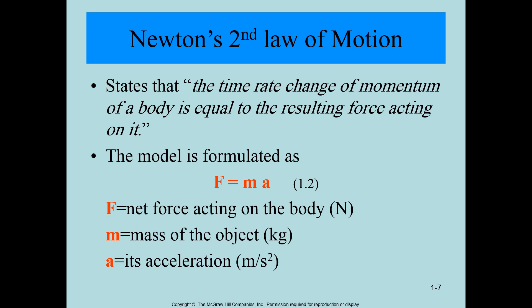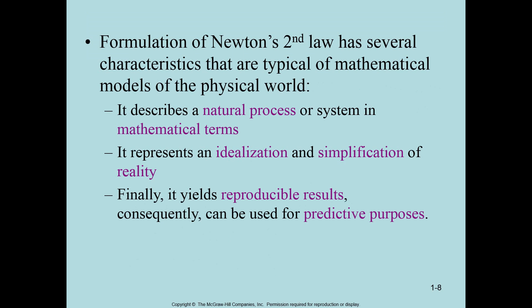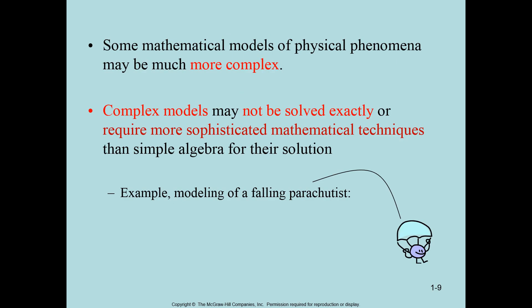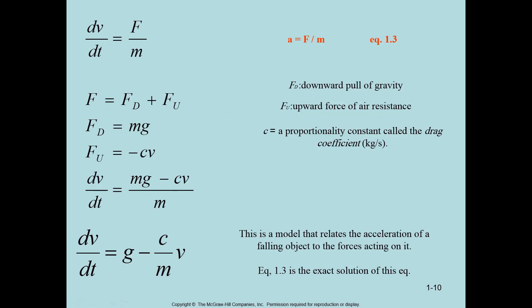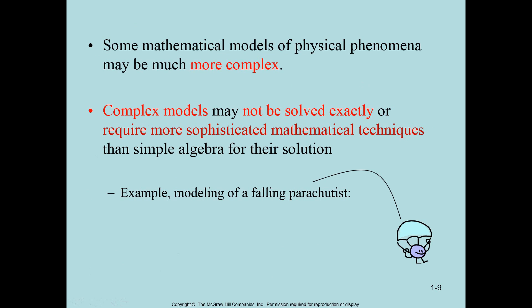A body could be at rest or moving with uniform velocity. Let's discuss the parachuter problem — how we can model an object that we can correlate with physical laws. If there is a parachuter who jumps, there are two forces acting on them: the drag force acting upward and gravity acting downward. The net resultant force is the sum of these two forces.